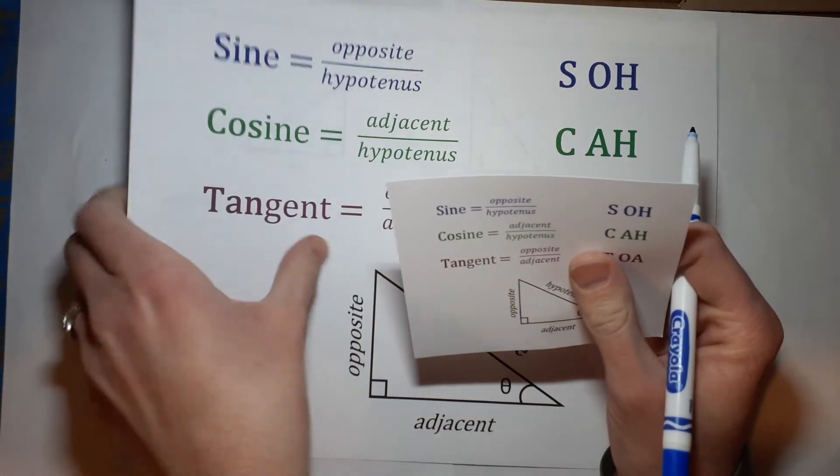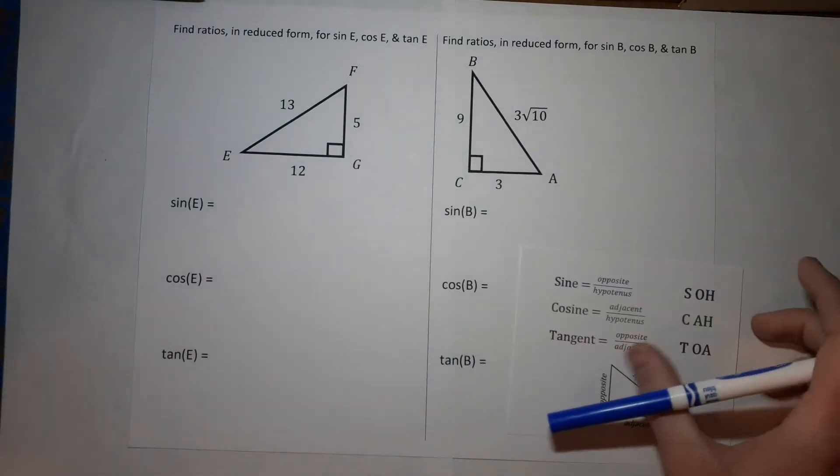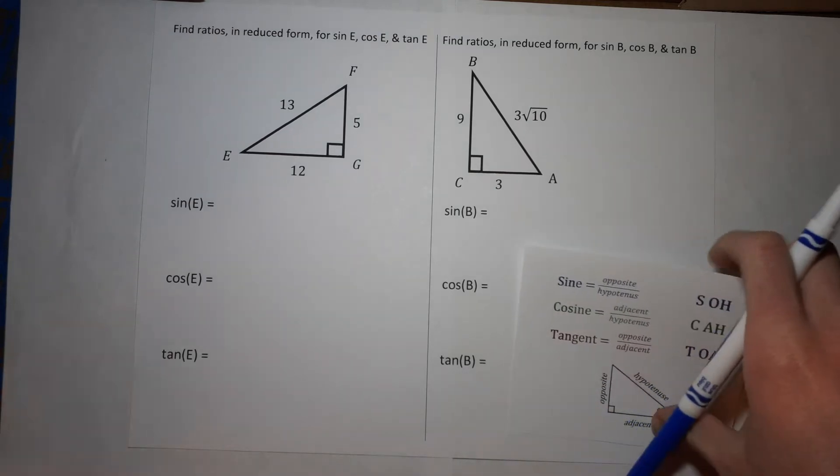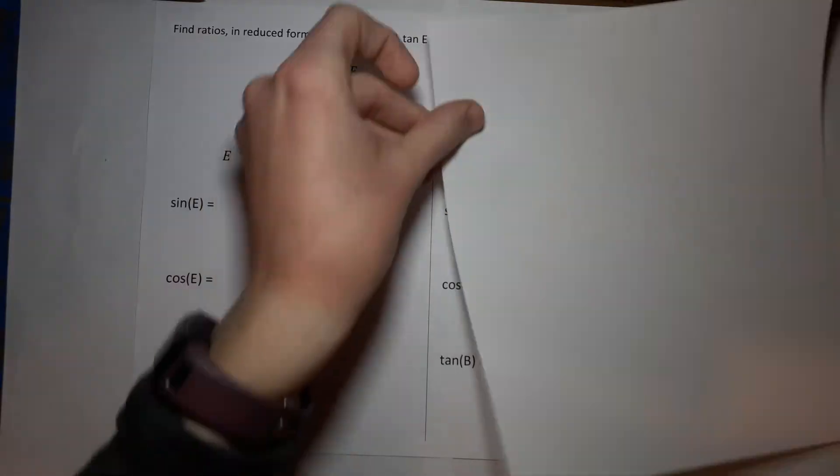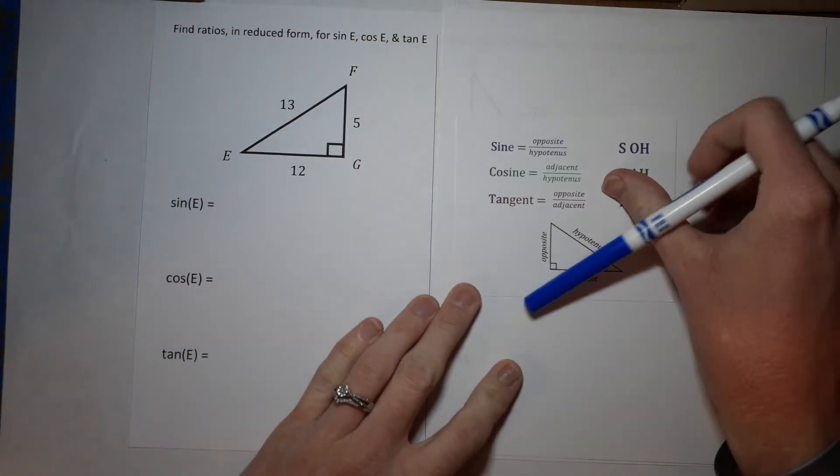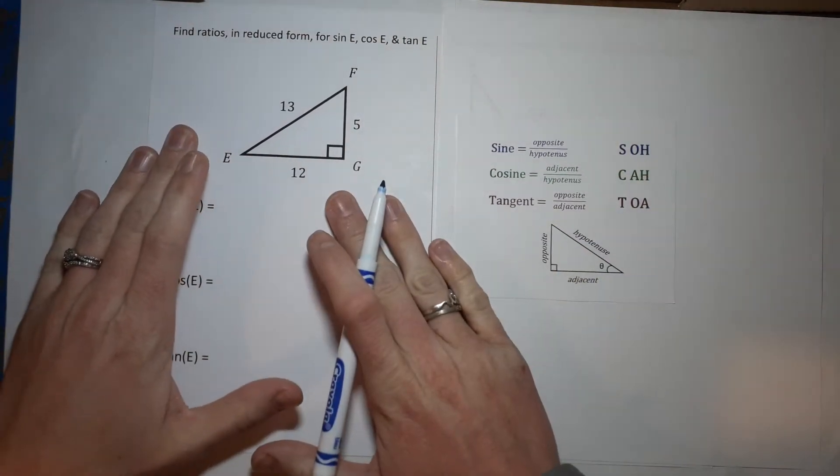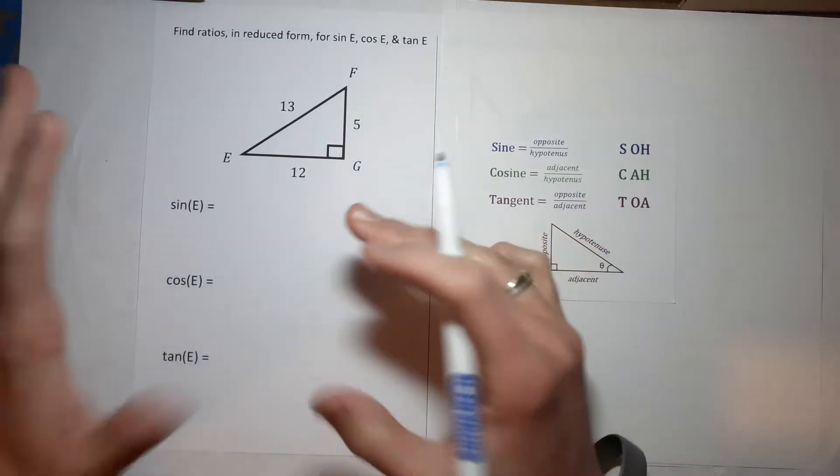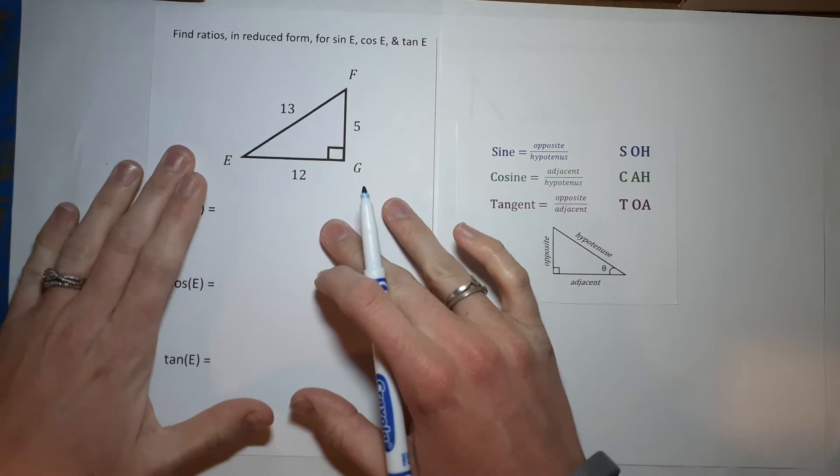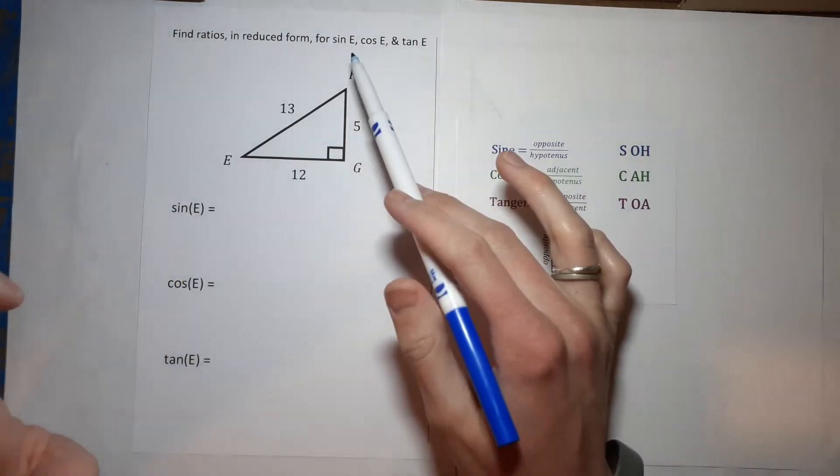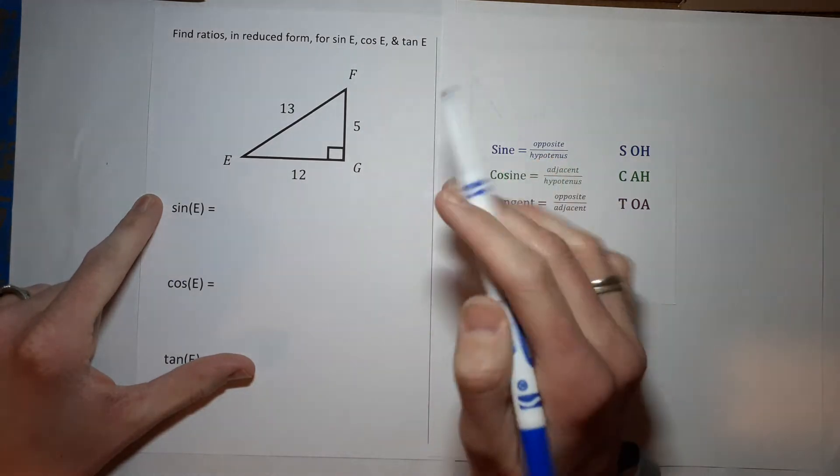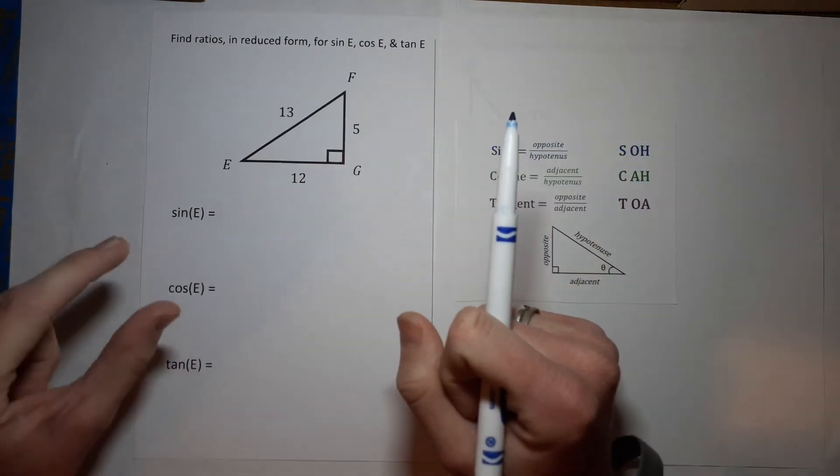Alright, guess what? I have my mini one here so that we still have our little reference sheet. So you might have something that looks like this. I'm gonna cover up this side for a second so we don't have so much going on. Here's our triangle. We want to find the ratios in reduced form for sine of E, cosine of E, and tangent of E.